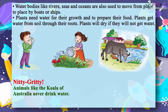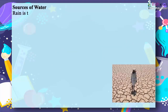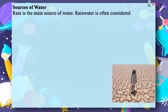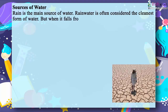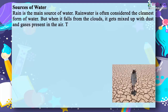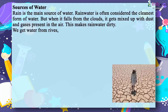Sources of water. Rain is the main source of water. Rainwater is often considered the cleanest form of water, but when it falls from the clouds, it gets mixed up with dust and gases present in the air, making rainwater dirty. We get water from rivers, lakes, ponds and wells. These sources of water are filled with rainwater.